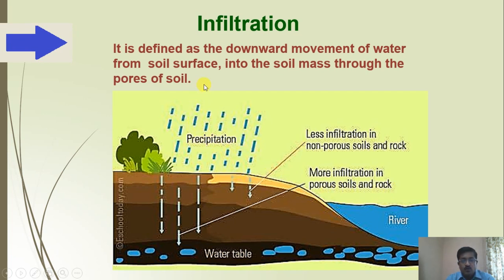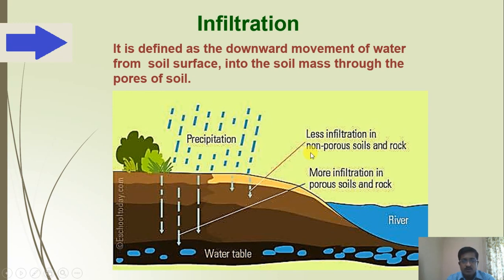What is infiltration? It is defined as the downward movement of water from the soil surface into the soil mass through the pores of soil. In the picture you can see precipitation has taken place. There is less infiltration in non-porous soils and rocks when hard stratum is present, but more infiltration in porous soils or rock when the strata is porous.